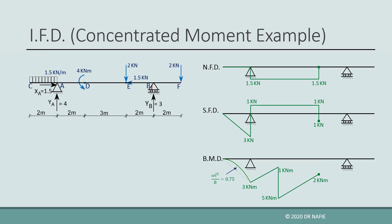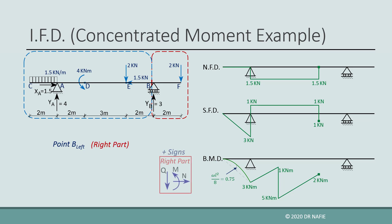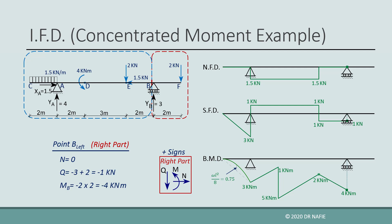We evaluate the internal forces at the point to the left of point B, this time using the right part, displaying the sign convention for the right part for reference. The normal force is zero and the shear force is negative 1 kN. The bending moment is calculated by taking moments about point B: YB passes through B and causes no moment, while the 2 kN point load is multiplied by an arm of 2 meters rotating in the negative direction, giving a moment of negative 4 kN·m.